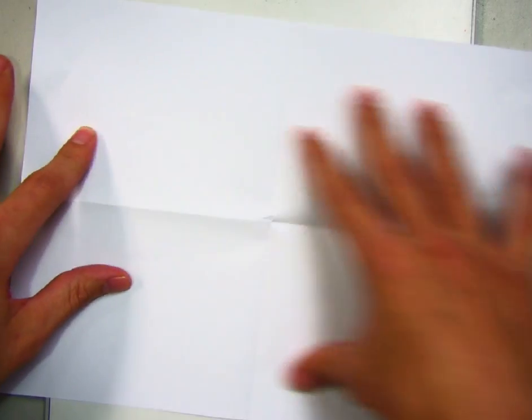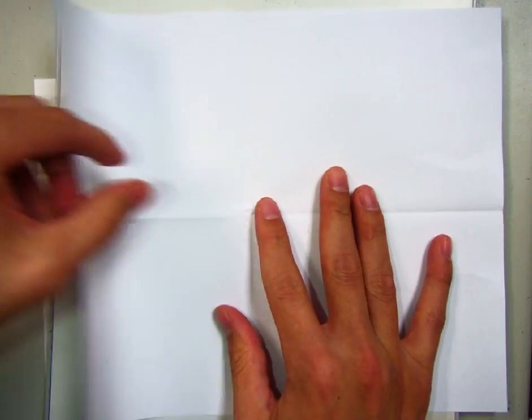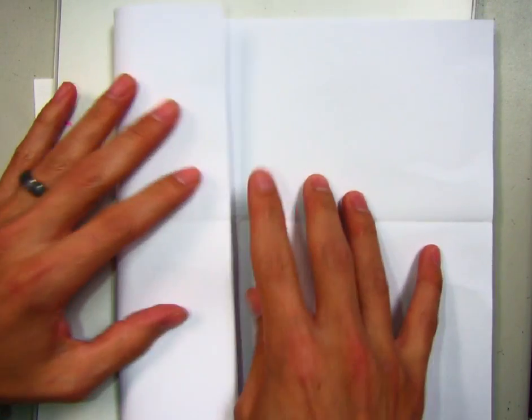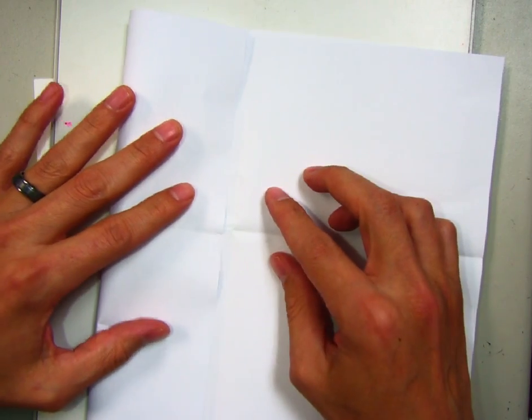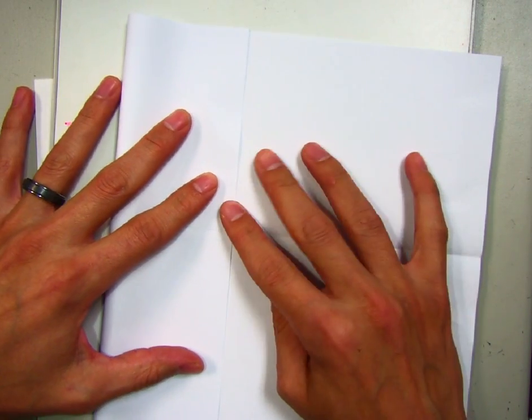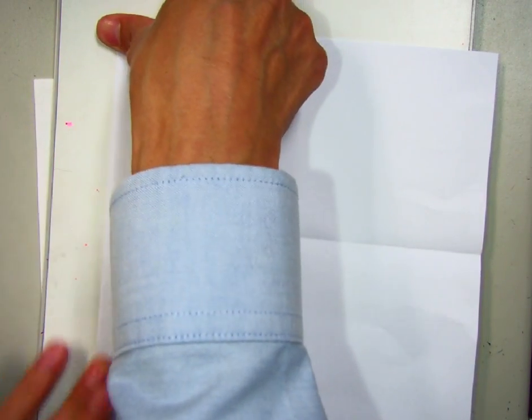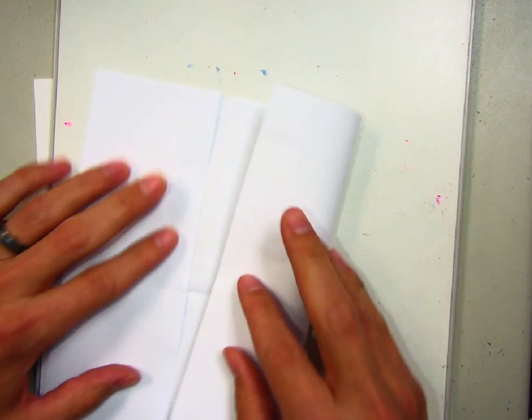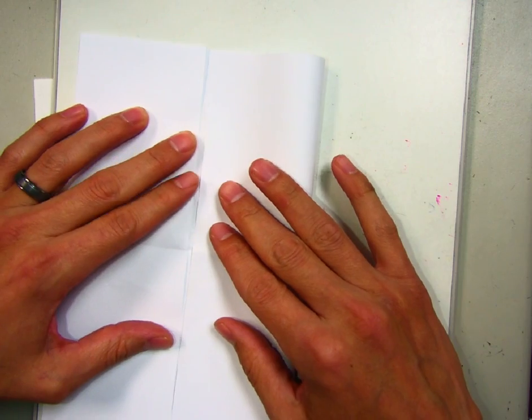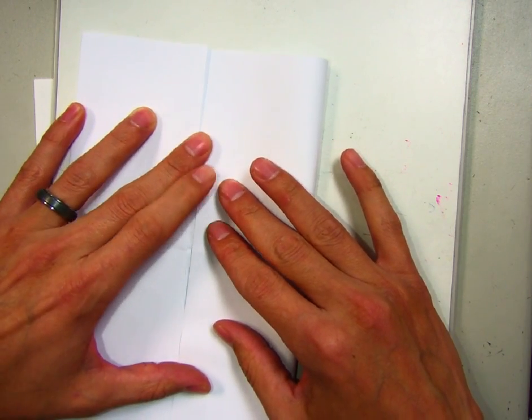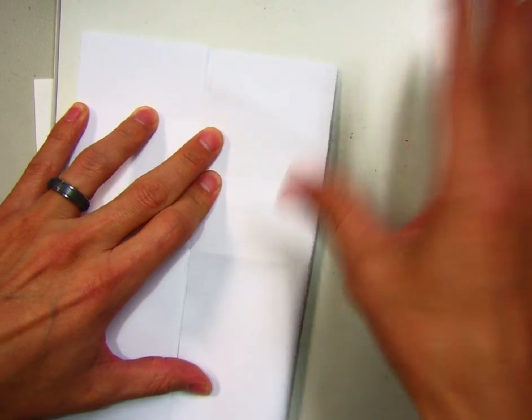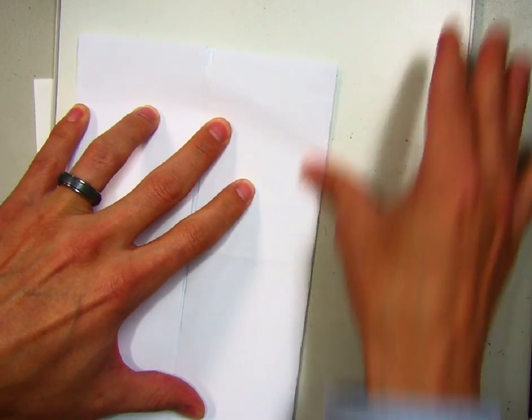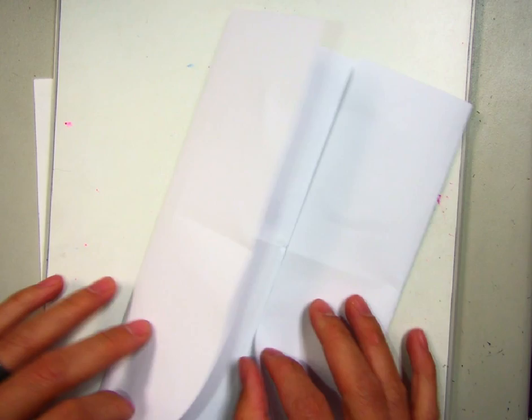Next thing you want to do is you're going to have this paper sideways here and you're going to fold it to the side. You're going to take this edge and take it to the middle of the paper. I'm going to take this other edge and also take it to the middle of the paper. So now you have kind of like this book, if you will, this pamphlet.